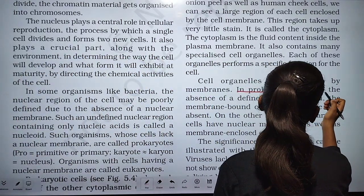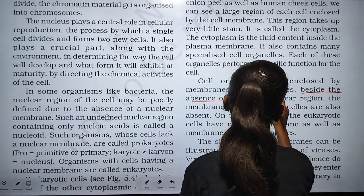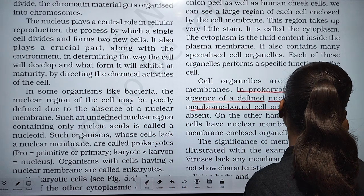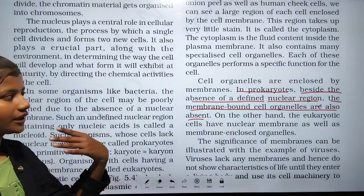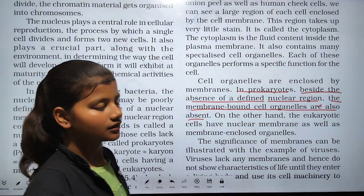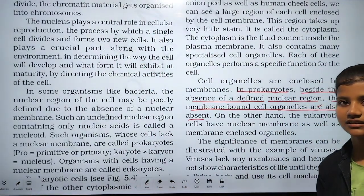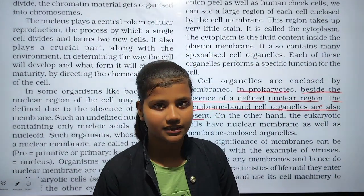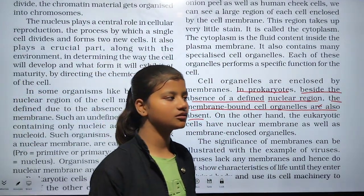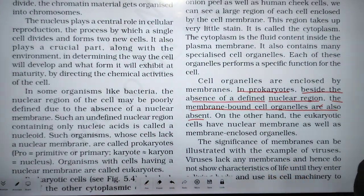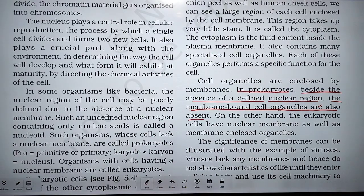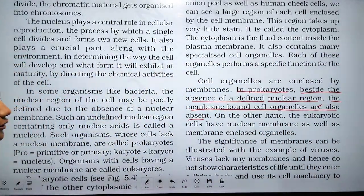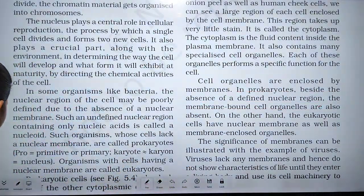In prokaryotes, besides the absence of a defined nuclear region, the membrane-bound cell organelles are also absent. Well-defined nucleus is not present in a prokaryotic cell as compared to a eukaryotic cell. In a prokaryotic cell, membrane-bound organelles are also not present.